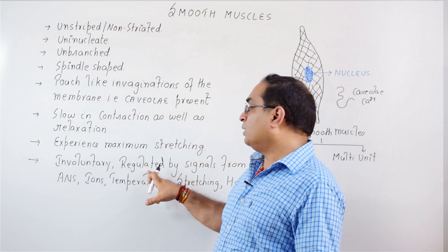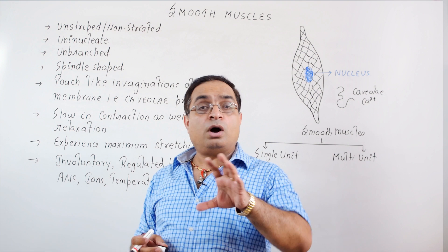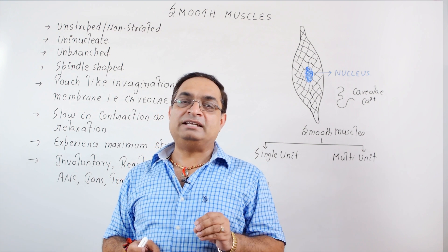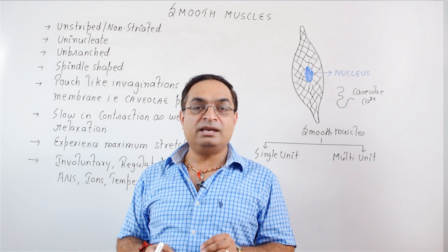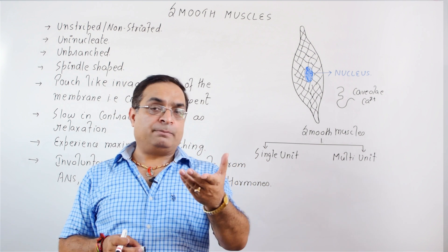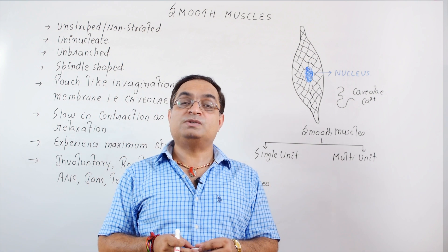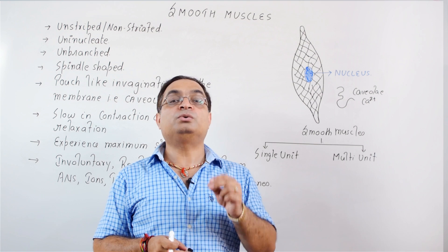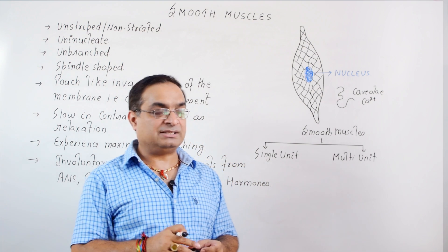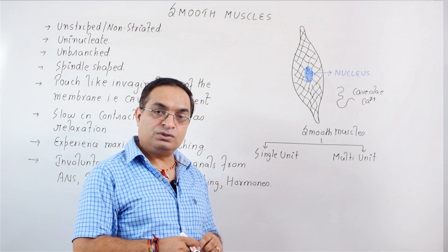Smooth muscles are involuntary — they are not under your conscious control. Their contraction and relaxation is regulated by signals from the autonomic nervous system plus hormones. For example, oxytocin hormone, also called the birth hormone, causes contractions of uterine smooth muscles. The myometrium has smooth muscle fibers, and oxytocin causes their contractions.